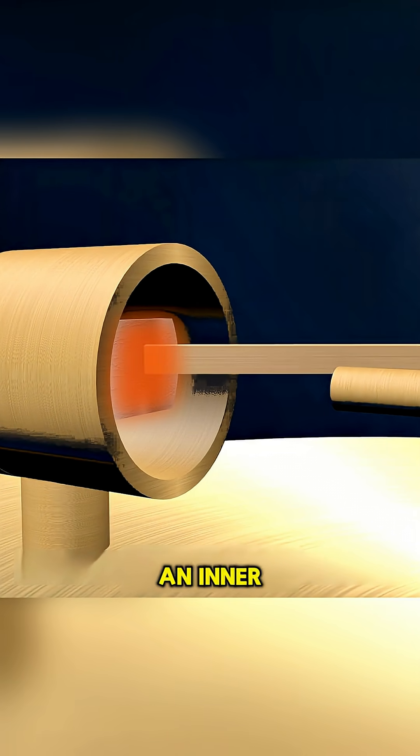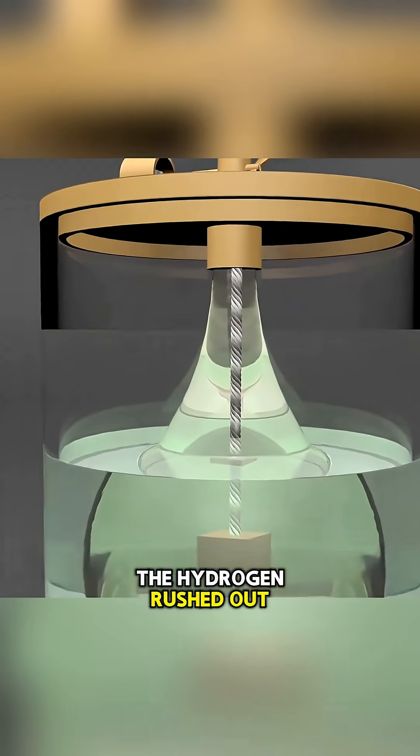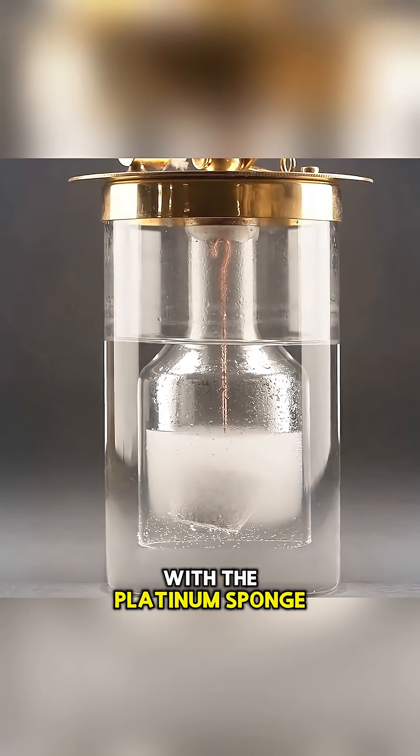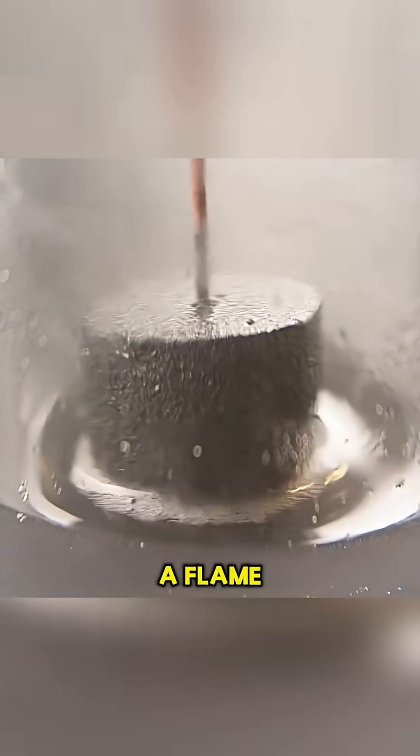That gas collected in an inner chamber. By opening a nozzle switch, the hydrogen rushed out and came into contact with the platinum sponge. The instant they met, a flame appeared.